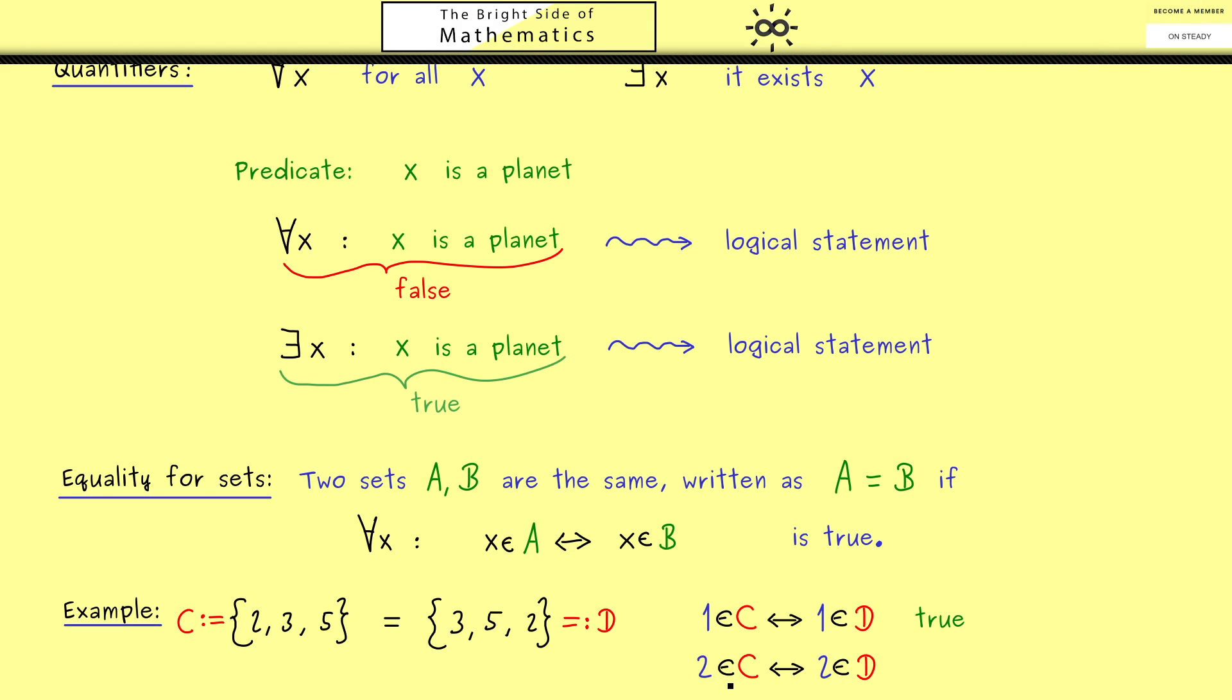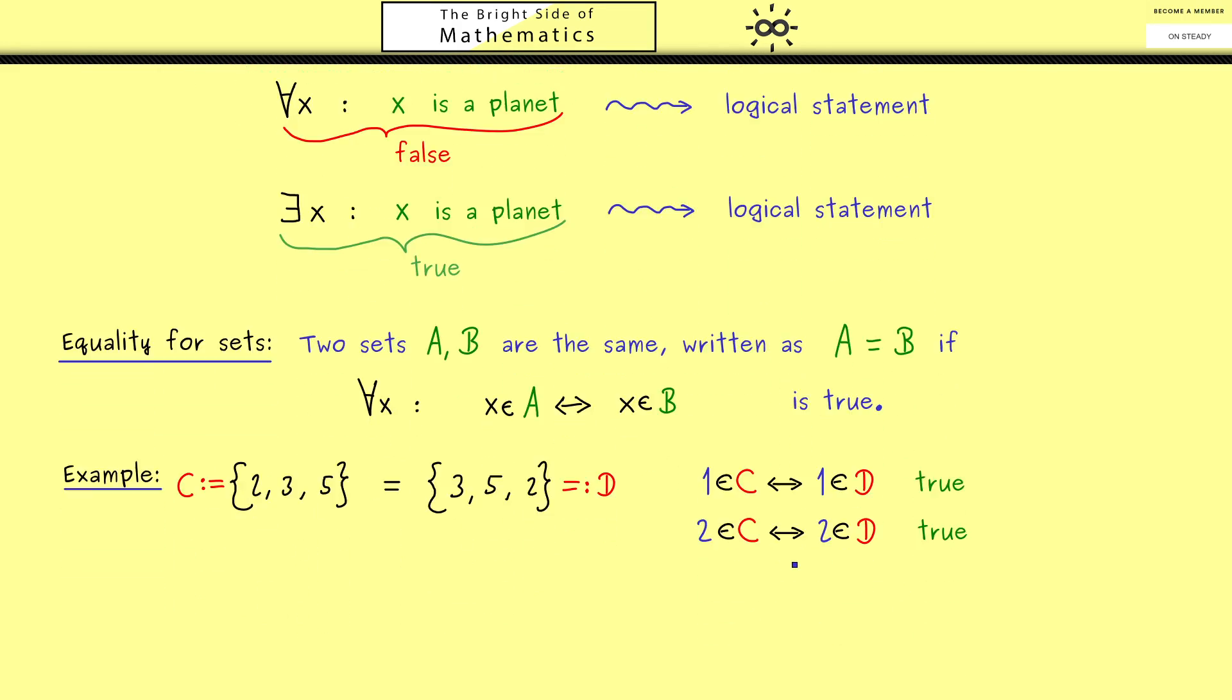Next is the number 2: '2 in C if and only if 2 in D' is also true because both sides are true. We can continue for all objects - either we're in this case for numbers 2, 3, and 5, or the first case for all other objects. Therefore the sets are indeed equal. A similar example with repeated elements also shows equality.